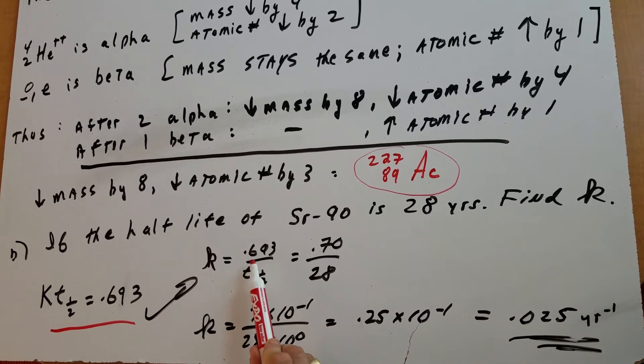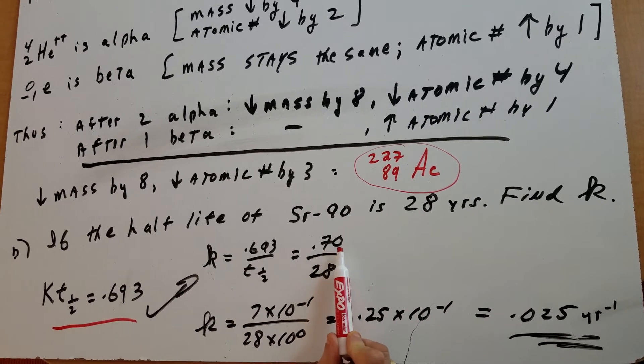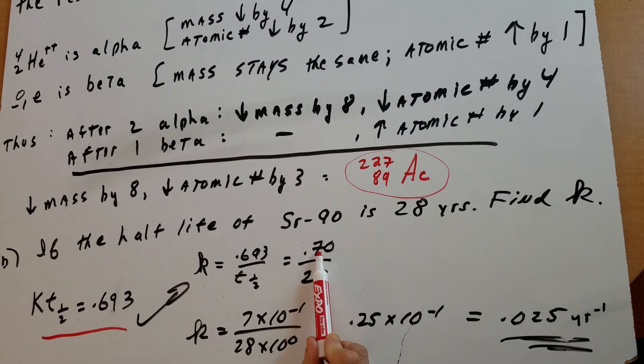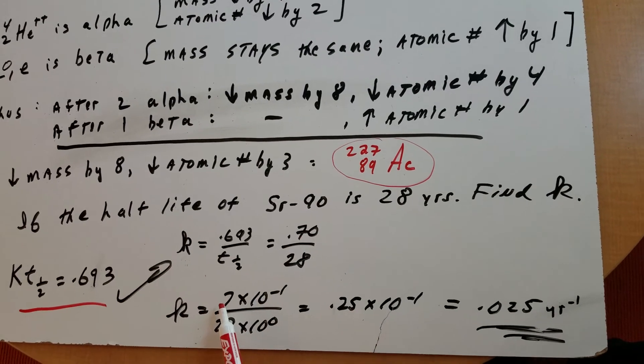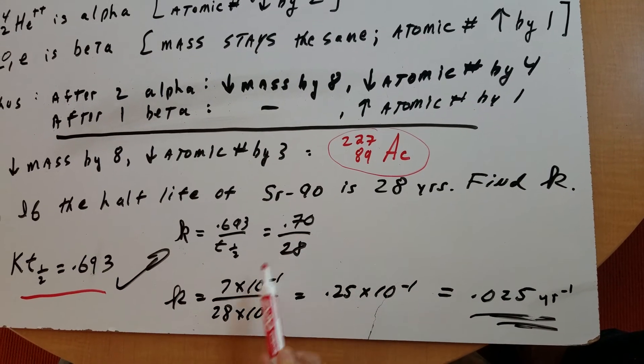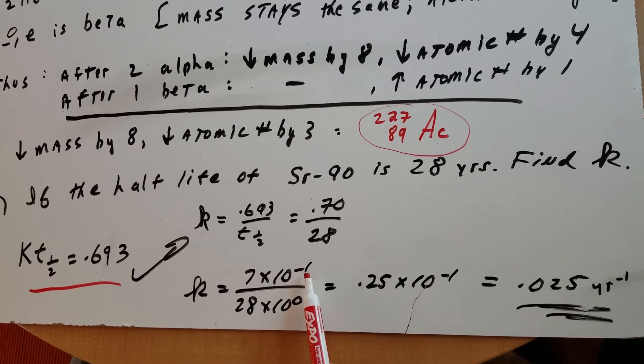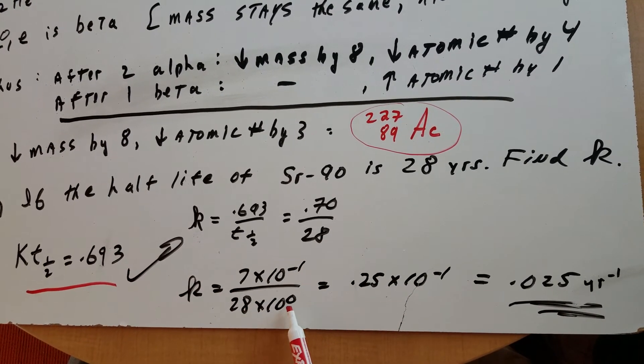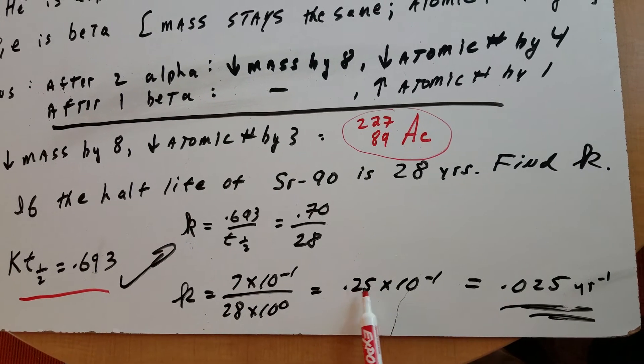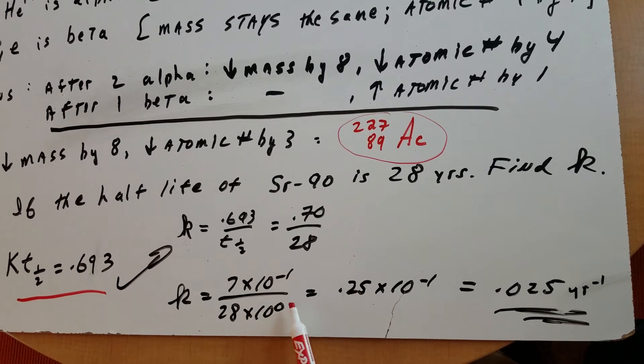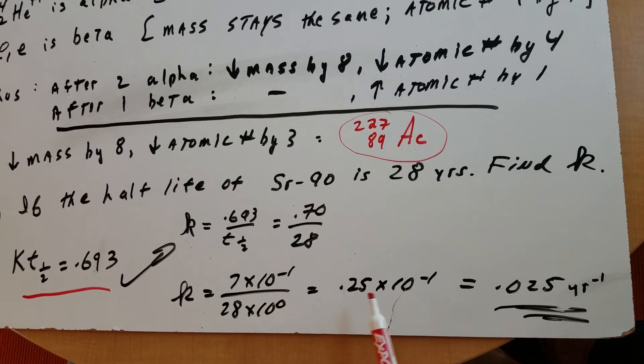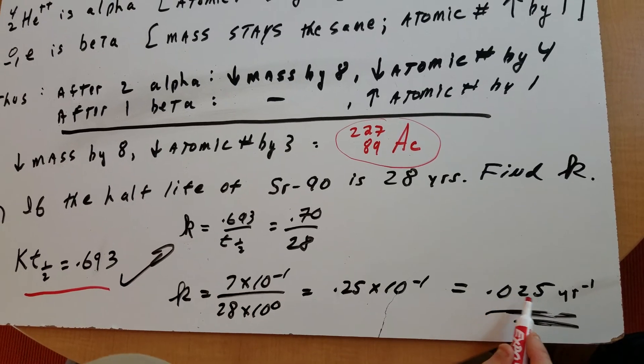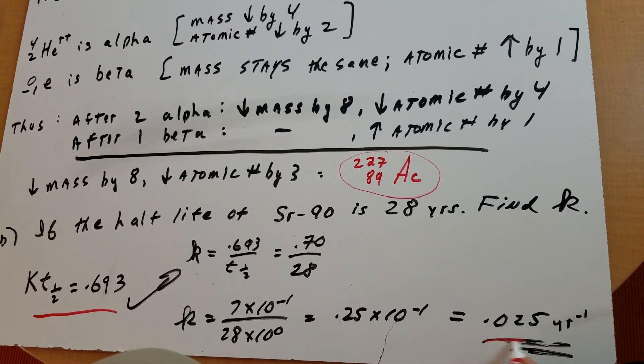Put the numbers in. 0.693 is roughly 0.70. The half-life was 28. Now, watch what I'm going to do. Let's solve this. 0.70, I love to get everything in scientific notation. So I'm going to write 0.70 is 7 times 10 to the minus 1, and 28 is just 28 times 10 to the 0. 7 divided by 28 is 0.25, minus 1, minus 0 is minus 1. So you're going to get 0.25 times 10 to the minus 1, or 0.025 for the final answer.